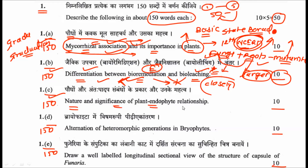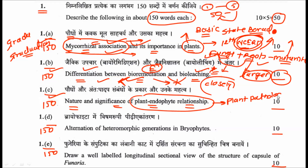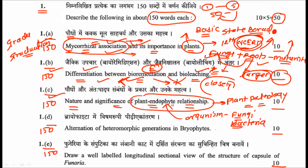The third sub-question asks about the nature and significance of plant–endophyte relationships, coming from the plant pathology section of the UPSC Mains botany syllabus. Most endophytes — organisms such as fungi and bacteria that live inside plants — interact with their host in ways that may be positive or negative in nature, and you have to specify all these aspects.